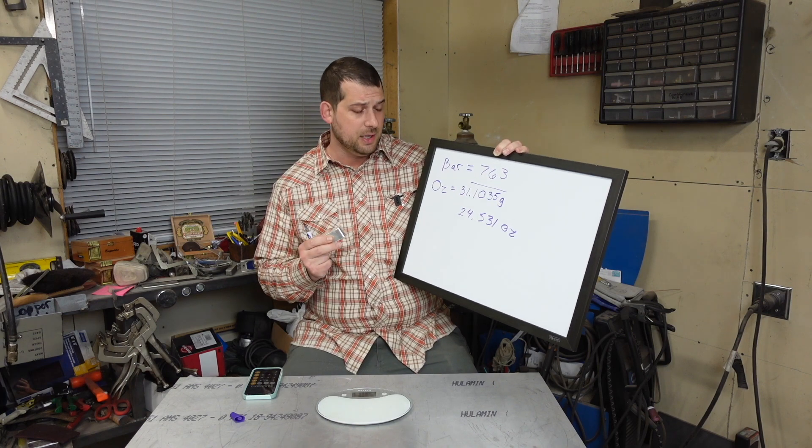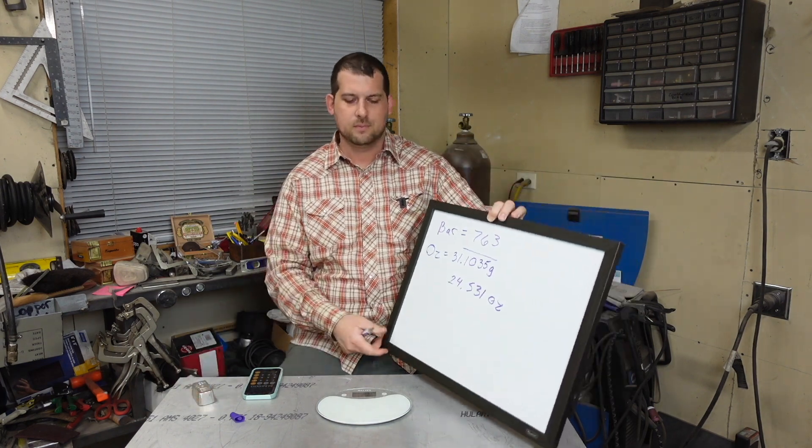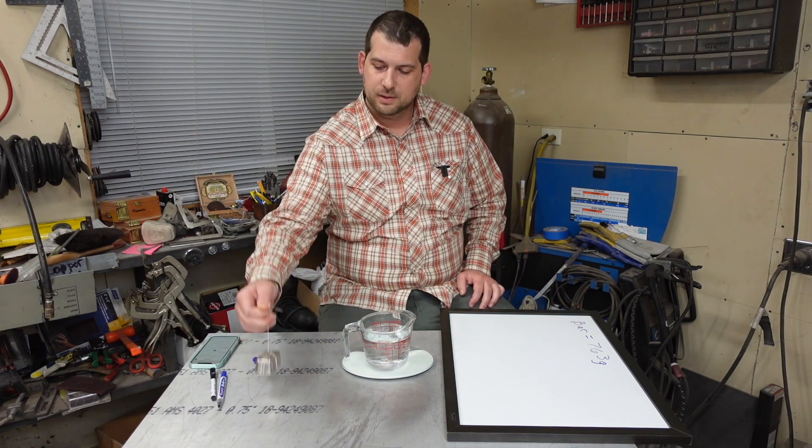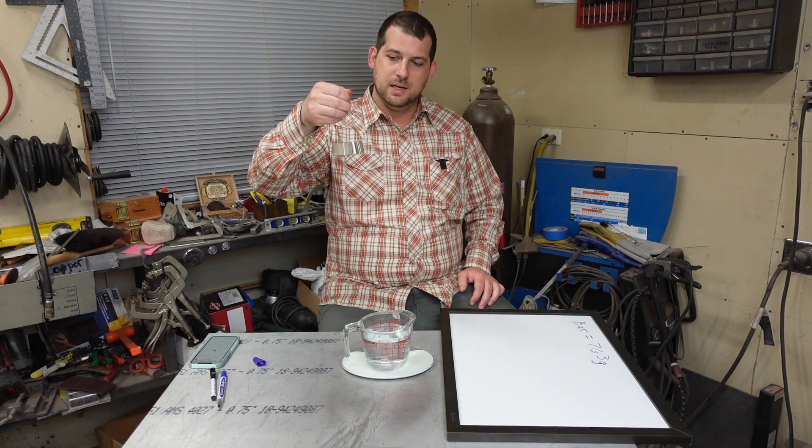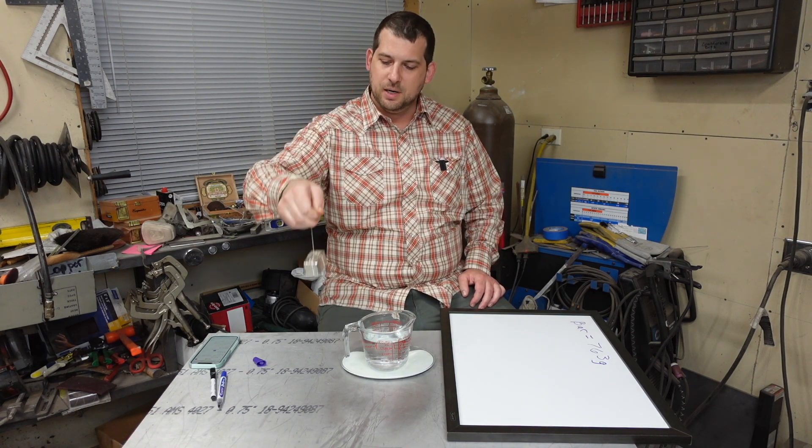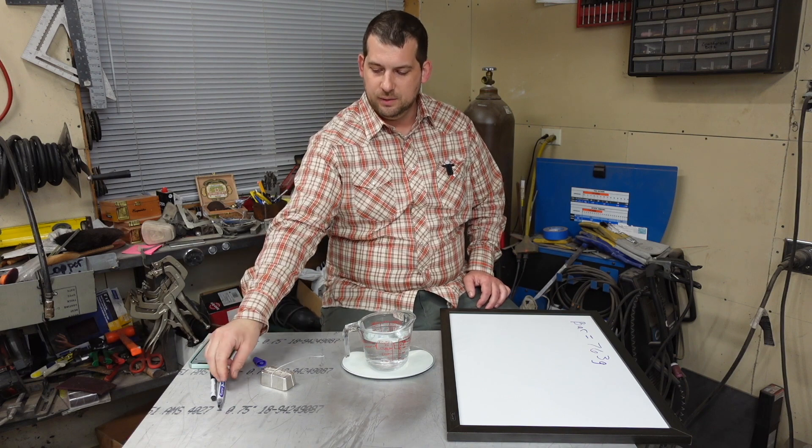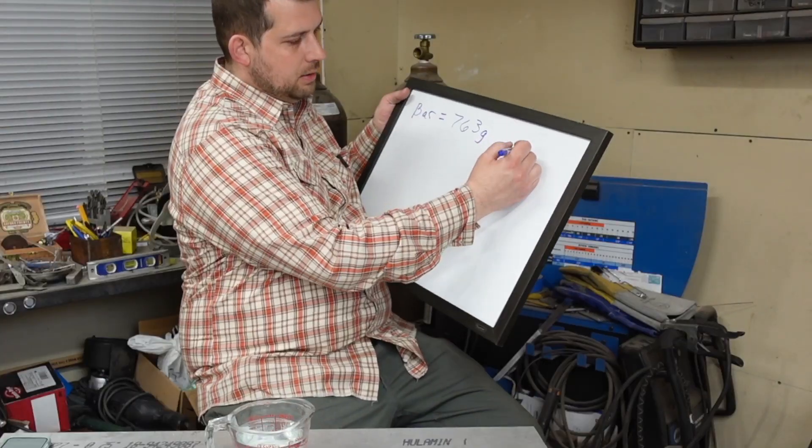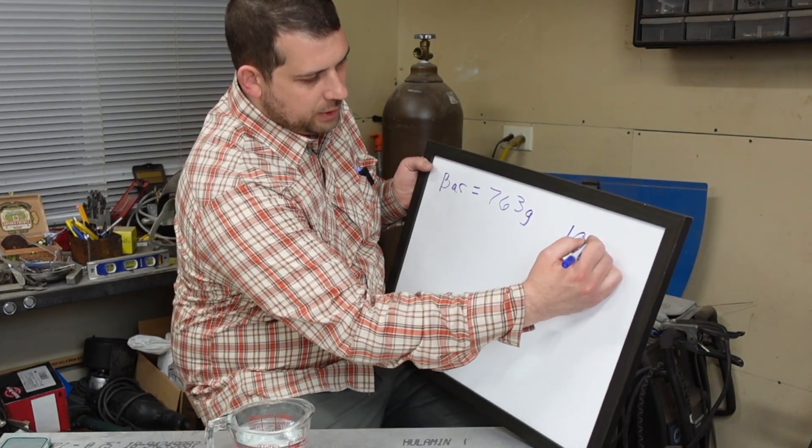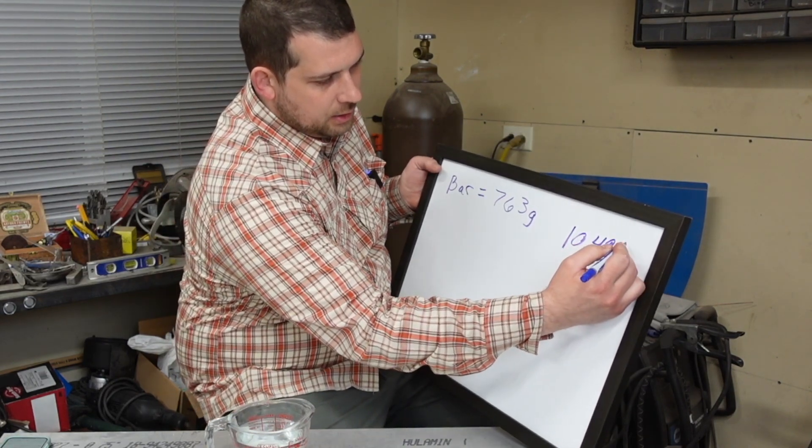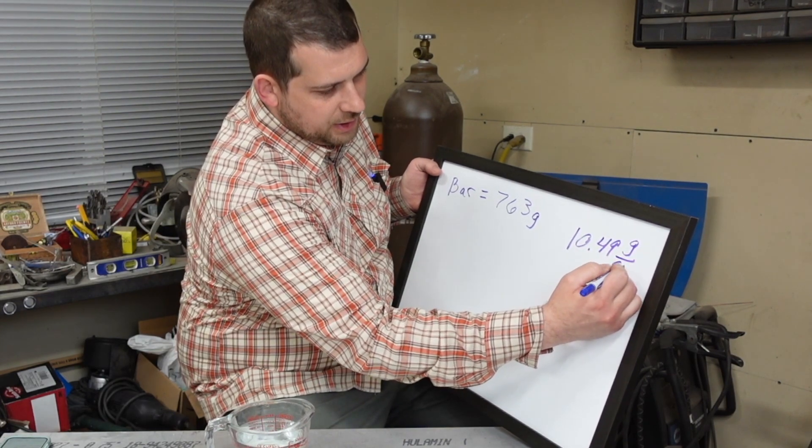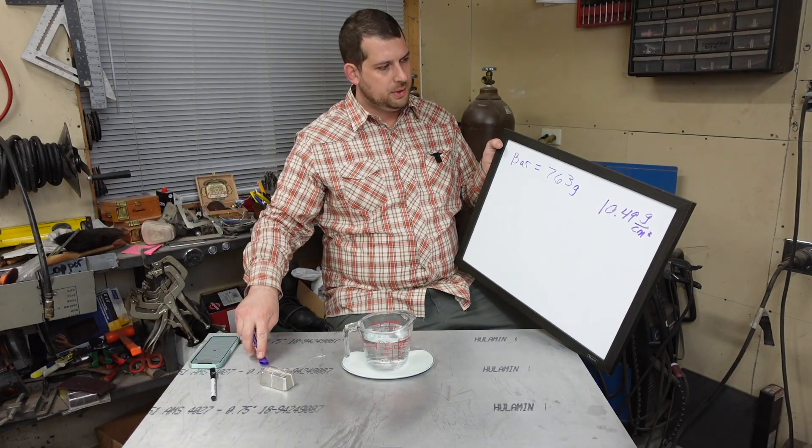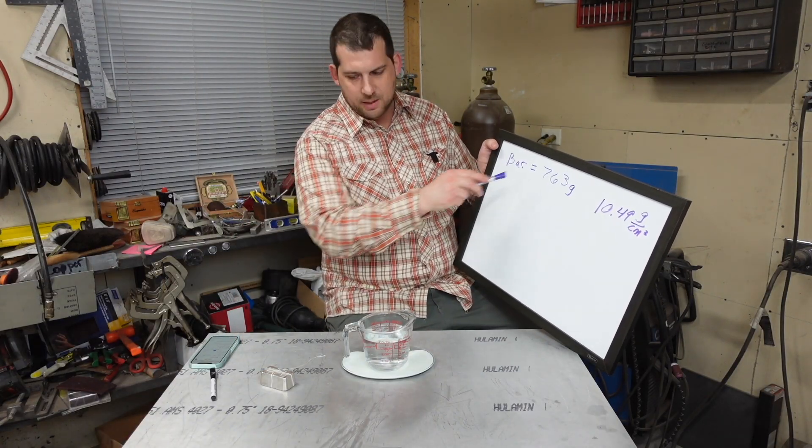So what we're going to do is we want to find the density of this bar right here, and we want to compare it to the known density of silver, which is 10.49 grams per centimeter cubed.